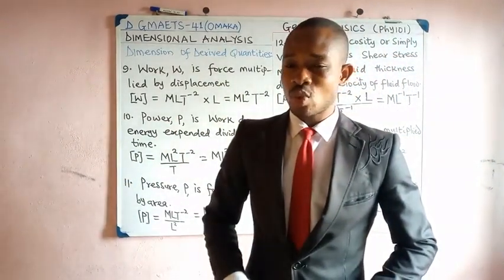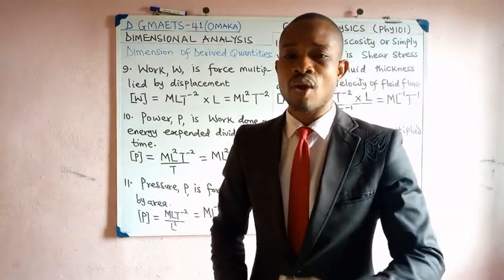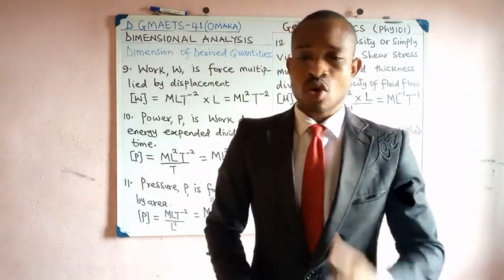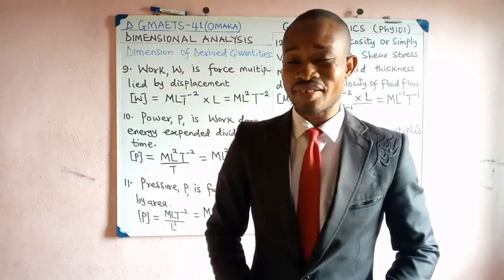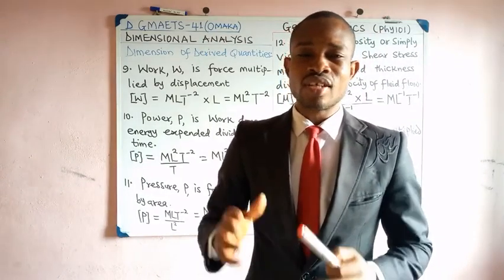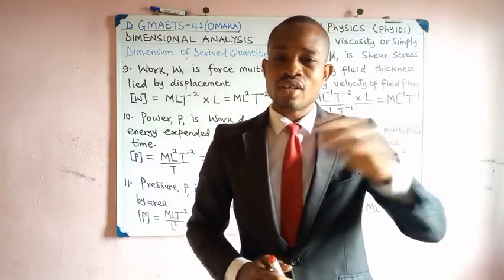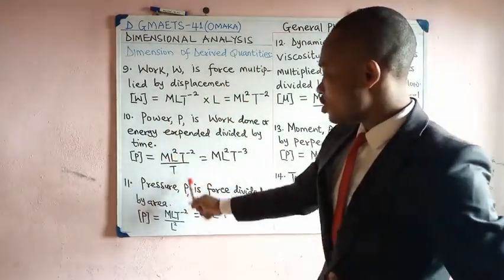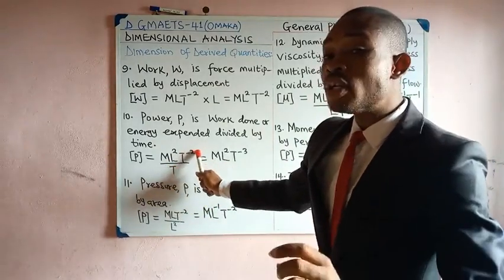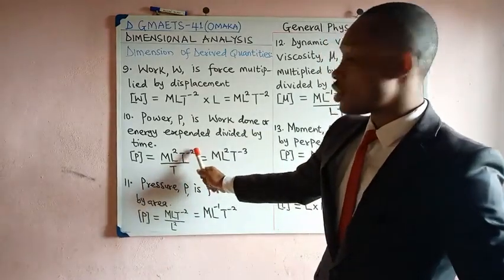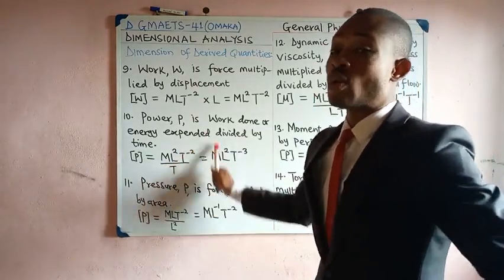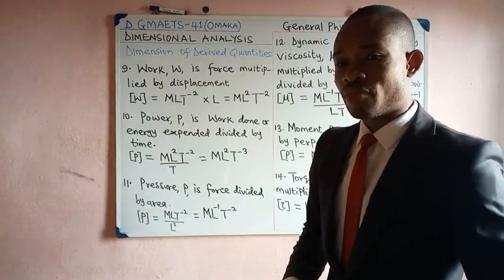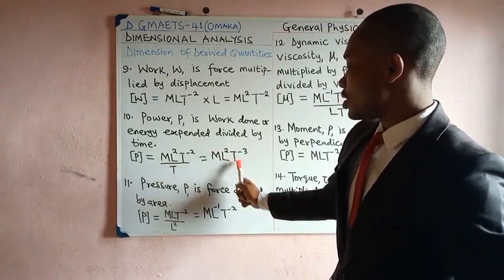Power is work done divided by time — or energy expended divided by time. Note that energy and work have the same dimension. The dimension of work is ML²T⁻². Dividing by T¹ — that T¹ moves up and becomes T⁻¹ — gives T⁻² × T⁻¹ = T⁻³. So the dimension of power is ML²T⁻³.